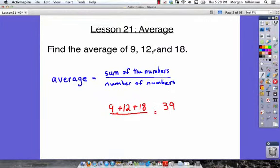And the number of numbers, well, we have one number, two numbers, three numbers. So we're going to divide by 3, because there's three numbers we can see here. Divide 39 by 3. 39 divided by 3 is equal to 13. So we've got our average. The average of 9, 12, and 18 must be equal to 13.